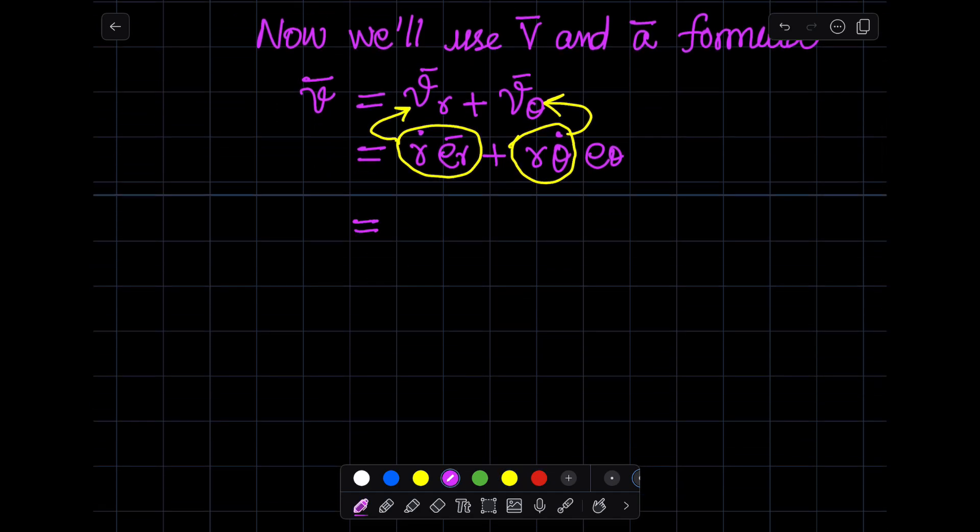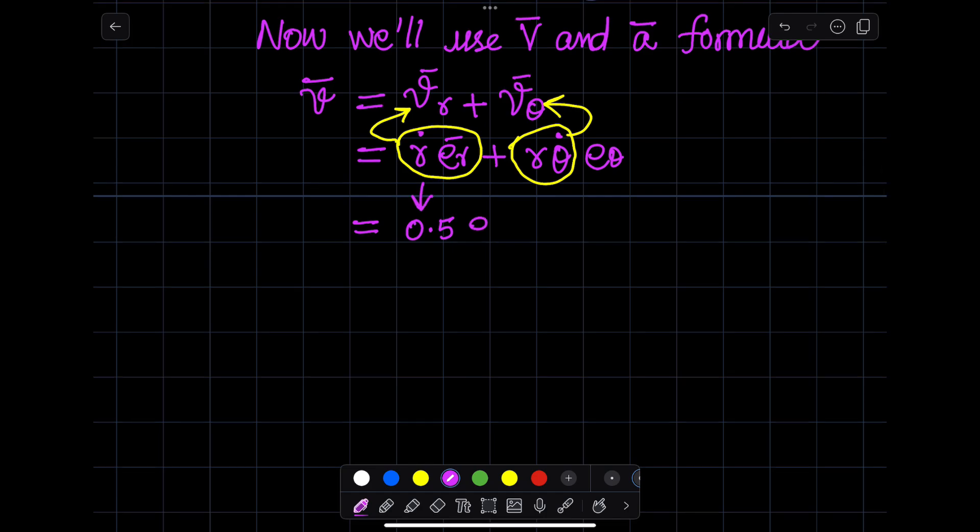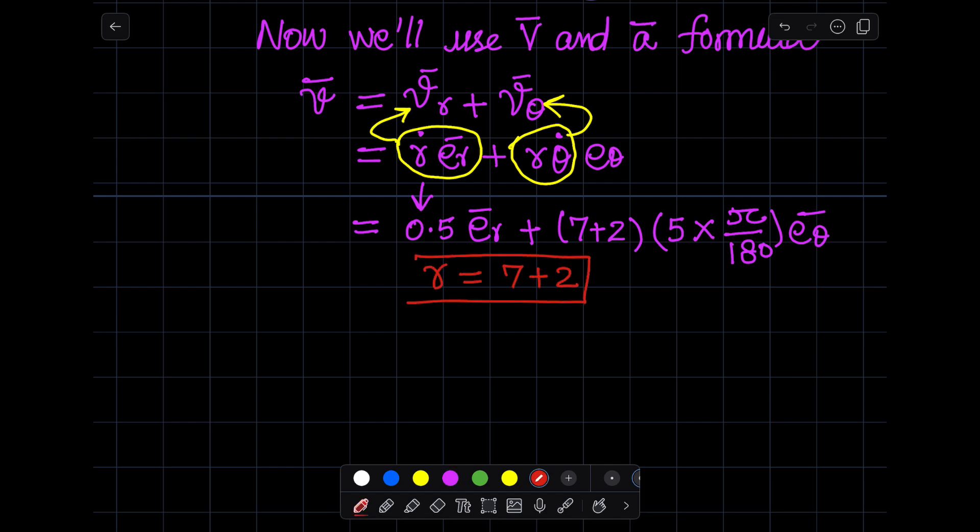So the components are written like 0.5 for r prime or r derivative, and for r make sure that it is 7 plus 2 meters. The total length is 9 meters.